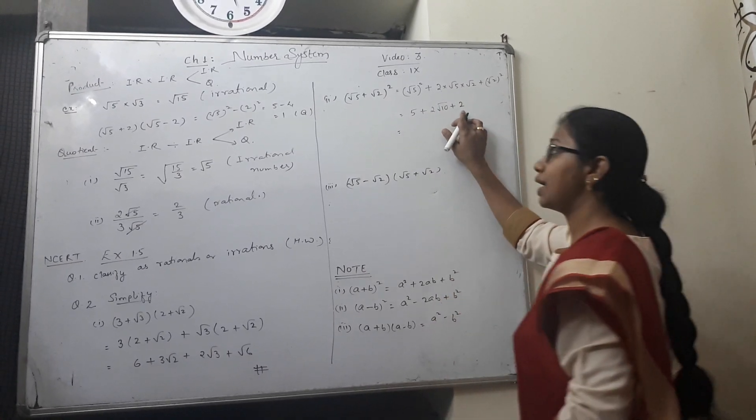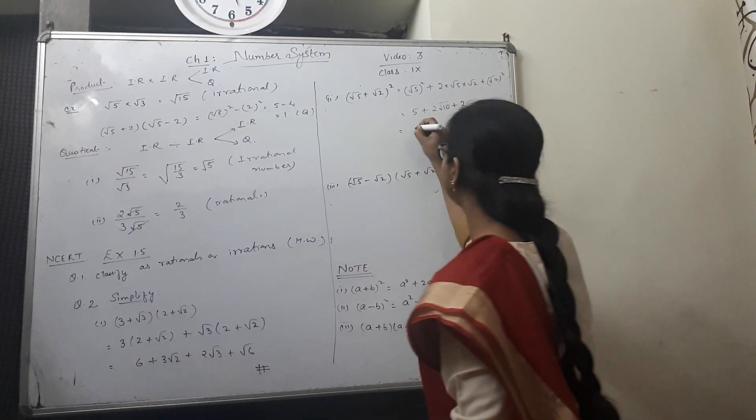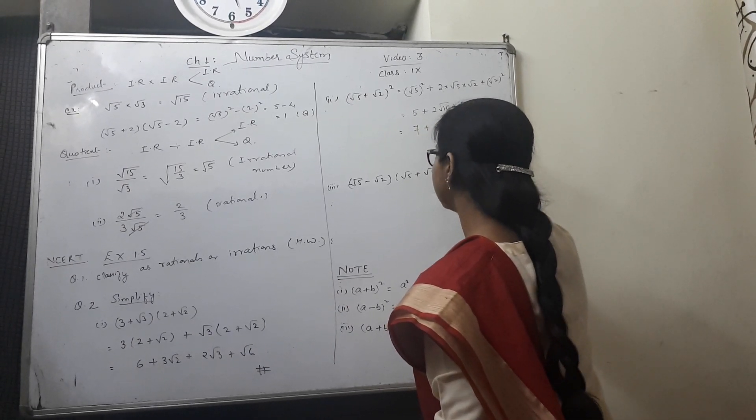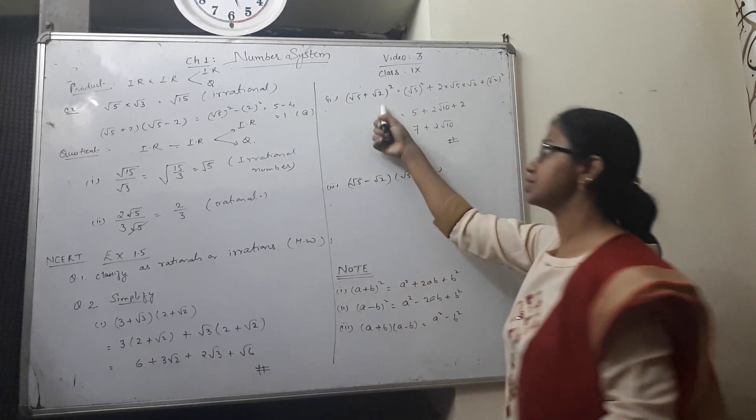So this is your answer. 5 and 2 are rational numbers. You can add it. 7 plus 2 root 10. This is your answer for question number 2.